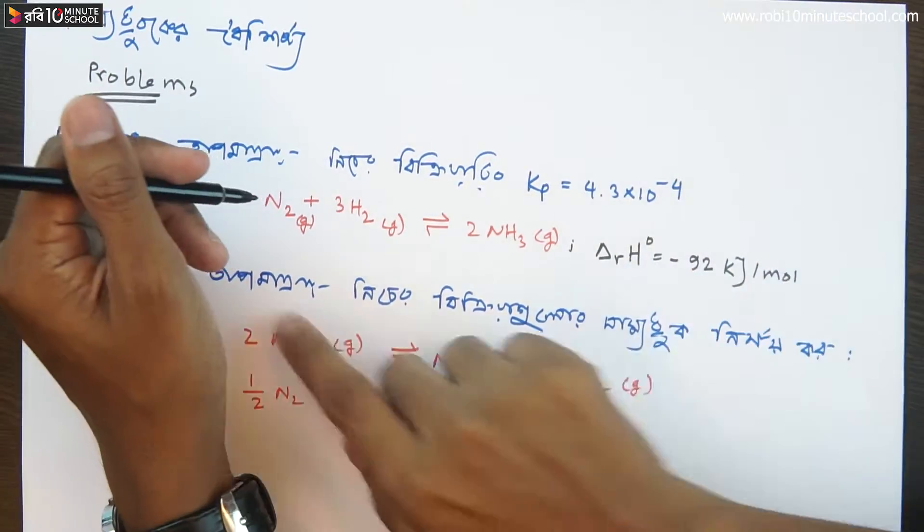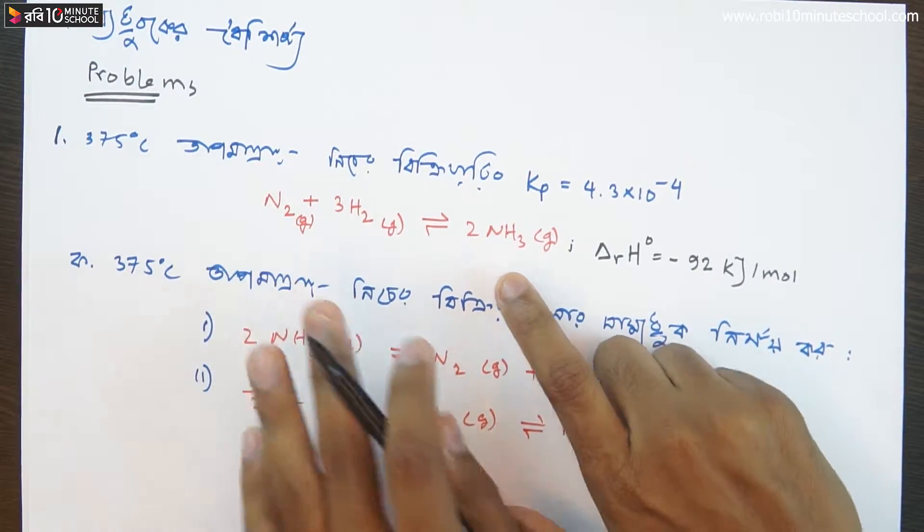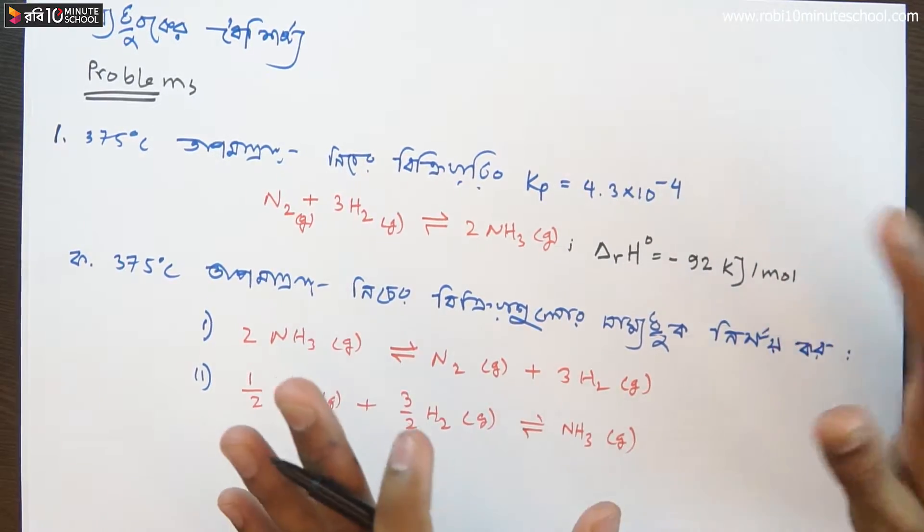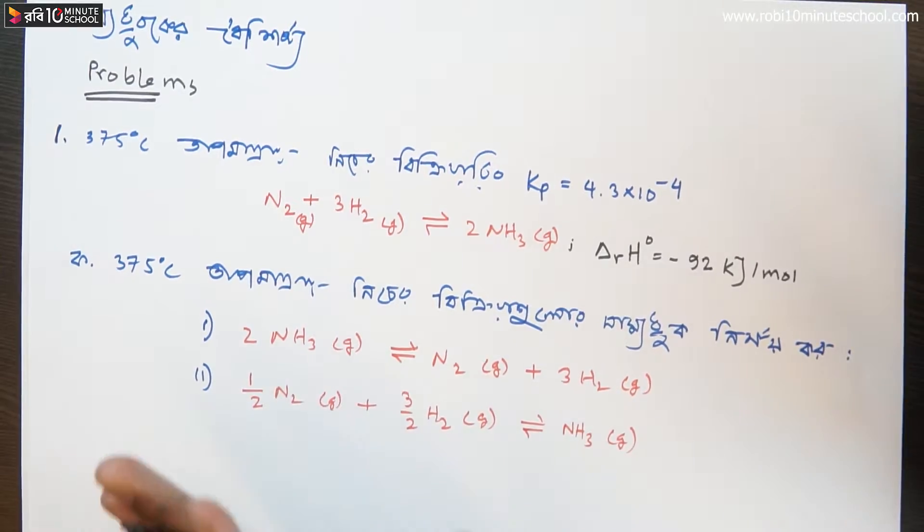Let me ask you some questions. This is the equation where nitrogen and hydrogen form ammonia. The Kp value is 4.3 into 10 to the power minus 4. The value is per mol.